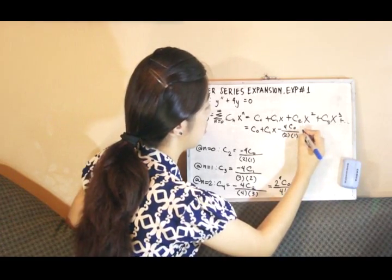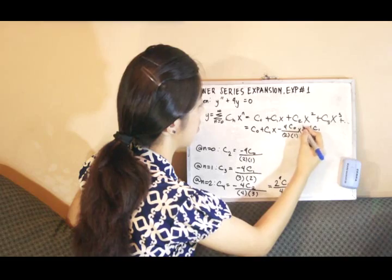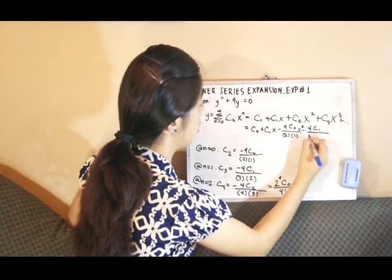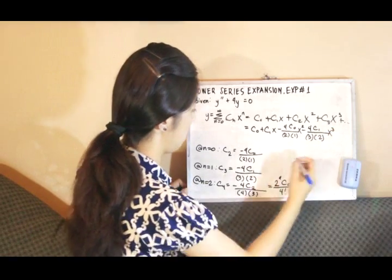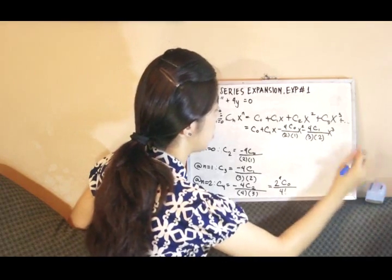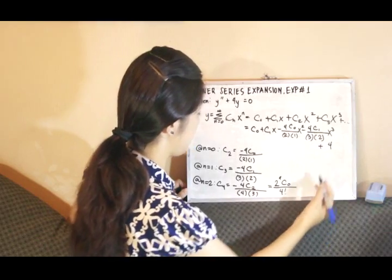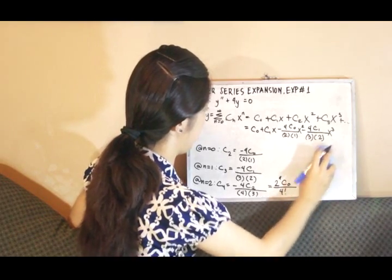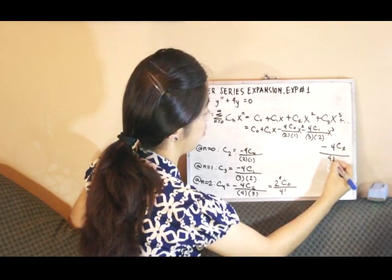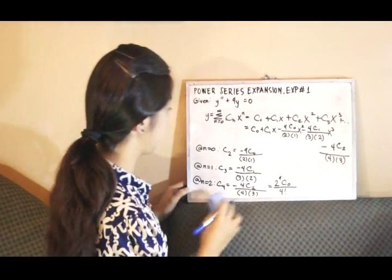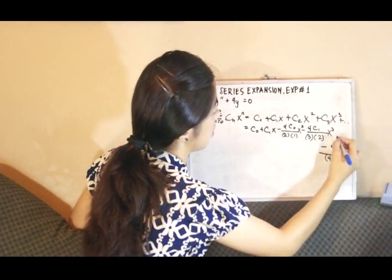Substituting the coefficient values, for c sub zero we have c sub zero, and then negative 4 over 3 times 2 times c sub 1 times x cubed, and for c sub 4 we have positive 16 c sub zero, which also equals 2 raised to 4 c sub zero over 4 factorial times x to the 4.